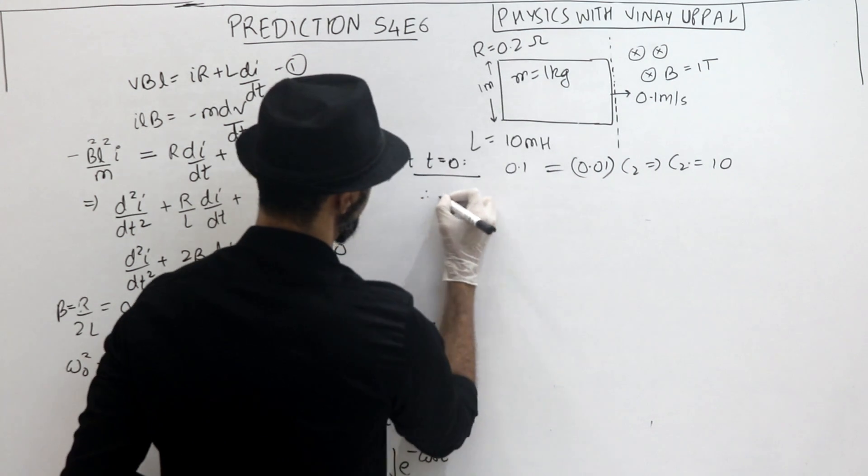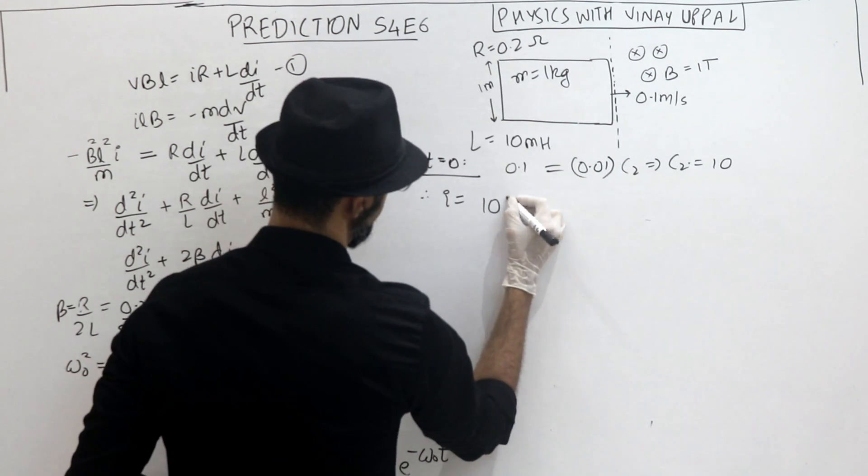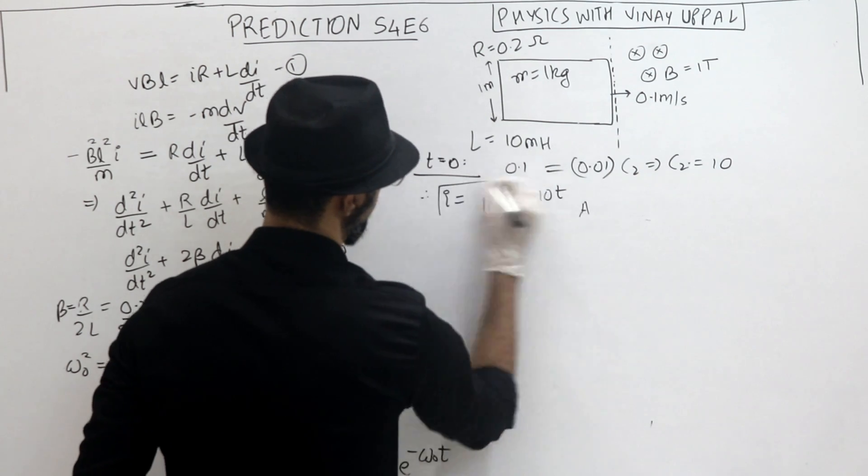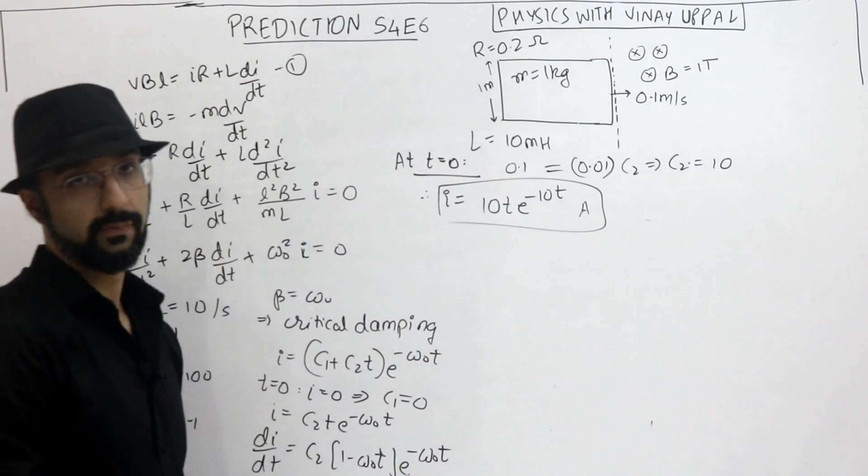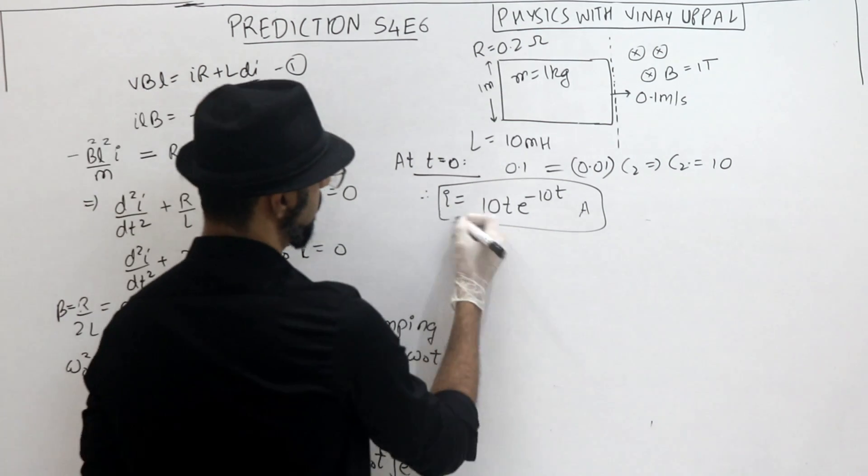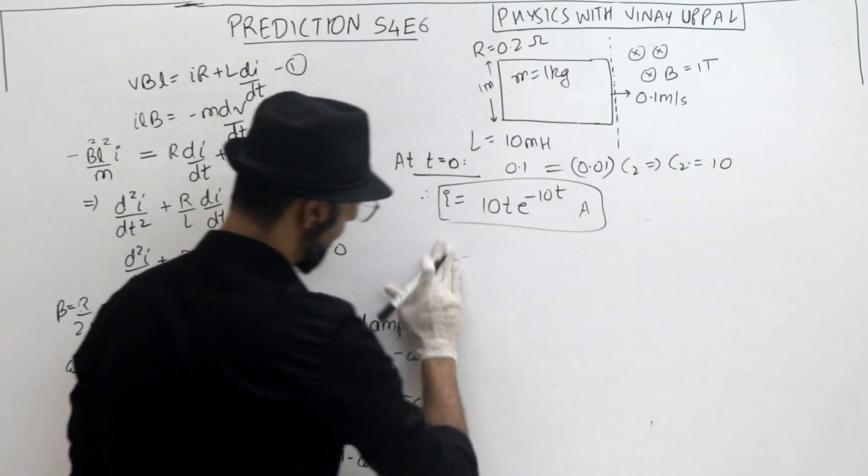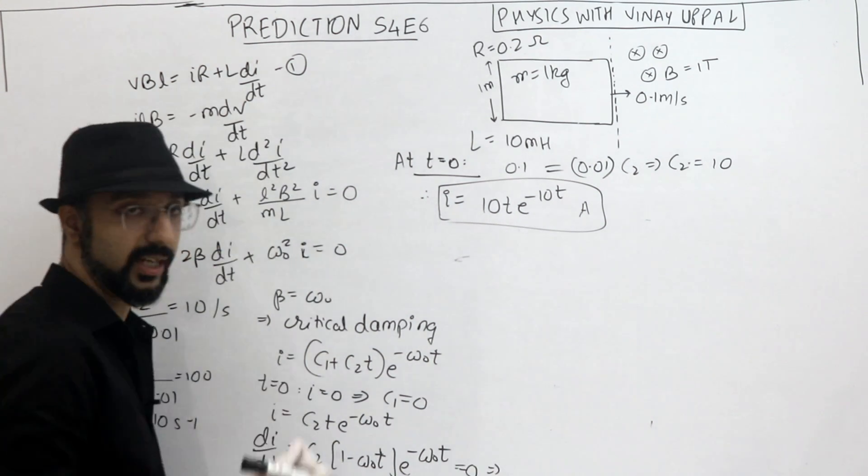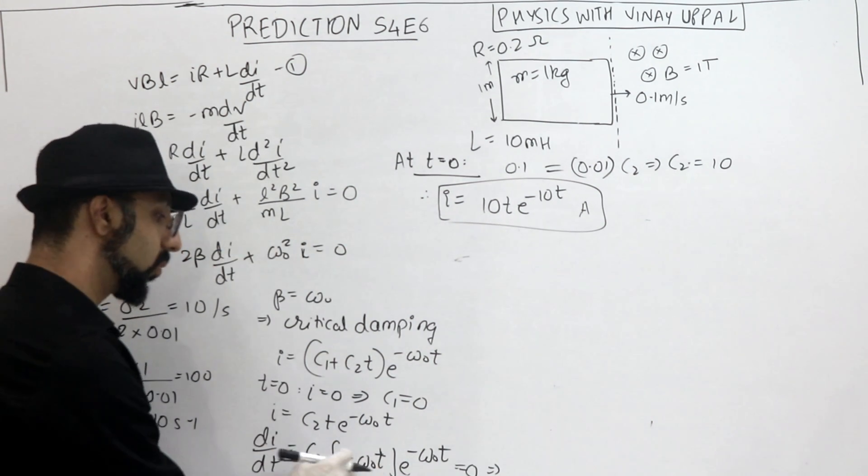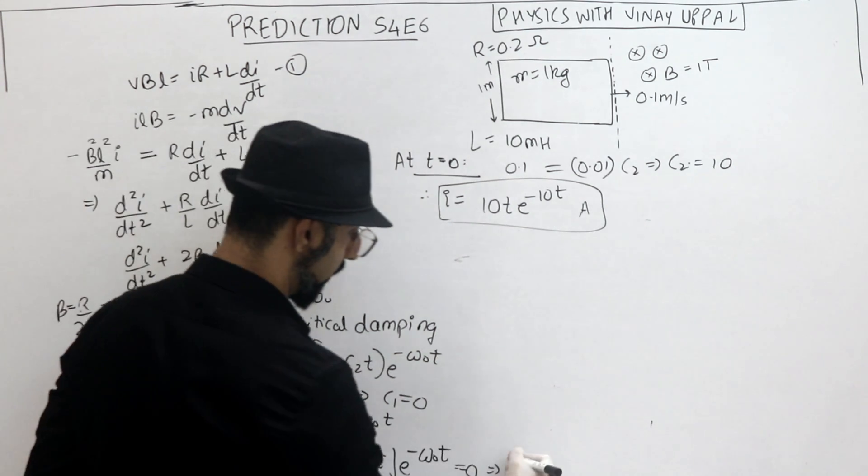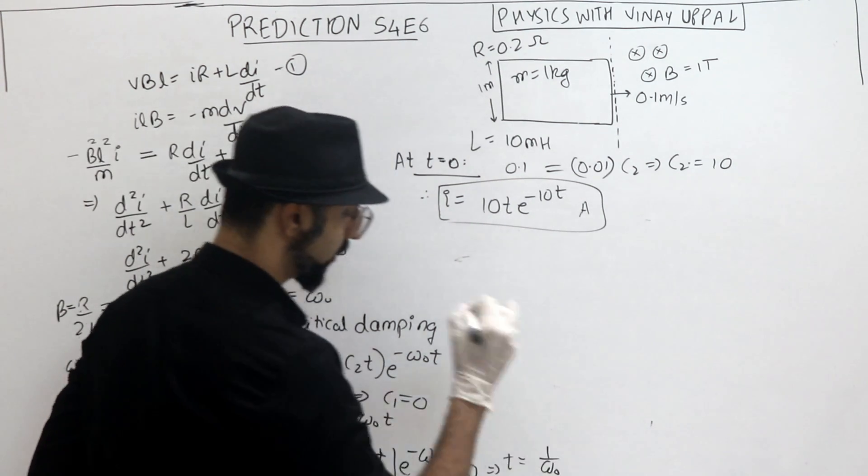And therefore finally my current aa gaya. 10t into e raised to minus 10t. Ye sab amperes mein, SI units mein kya pura. Yehe meera current as a function of time aa gaya. Ab to ho gaya, ab kuch nahi hai hai. Kya buchha ta? Maximum current and the time it occurs. Okay na? Bas di/dt yeh hi pher karo na. Di/dt 0 ho gaye. To yehaan se actually, time when it occurs, bina C2 nikale bhi tumko nikal jayega. Maxima ka time. You just di/dt zero karke, time ka value aa jayega 1 by omega naught. Thik ya?